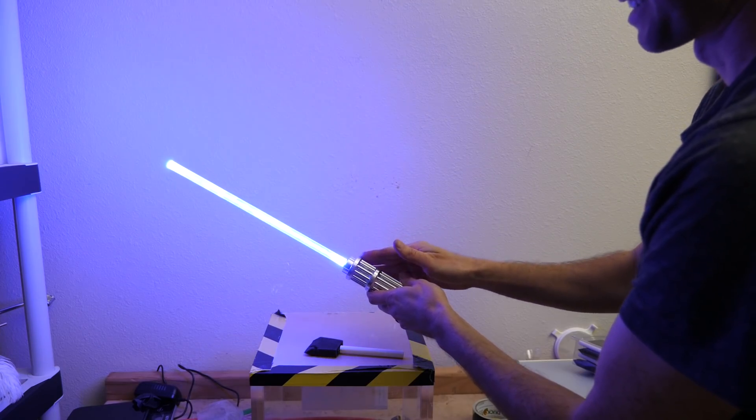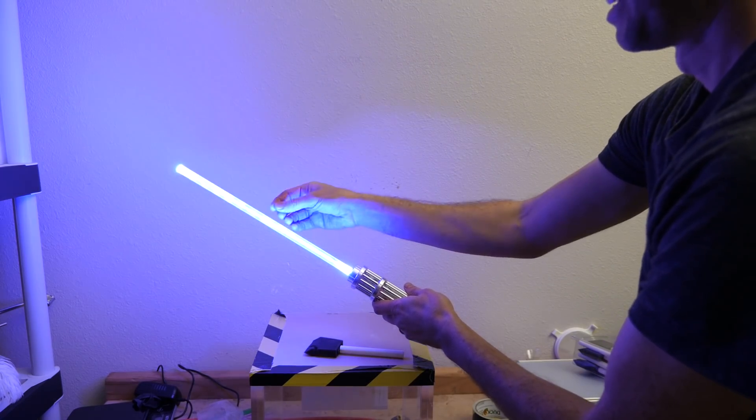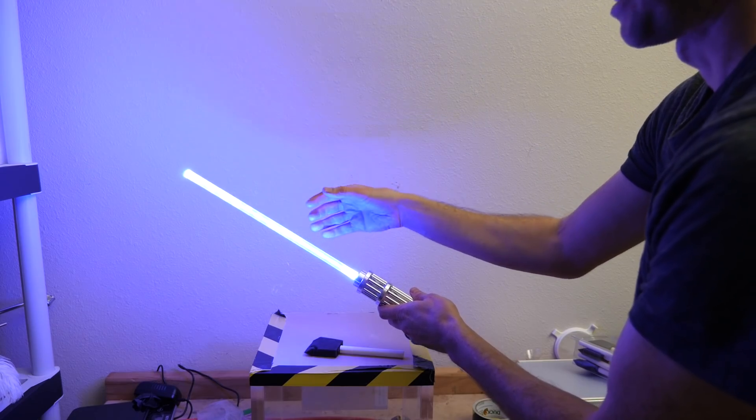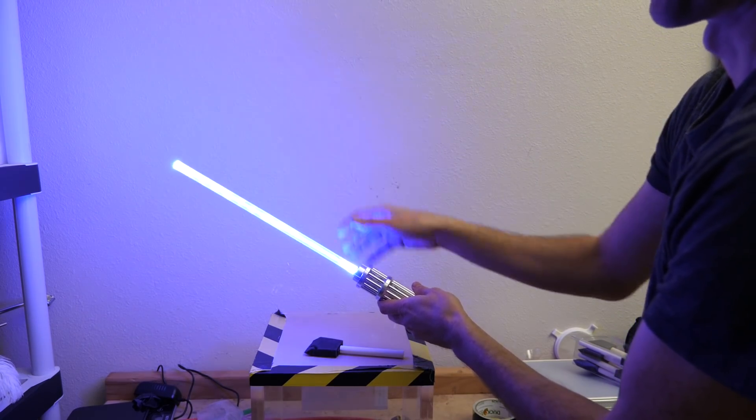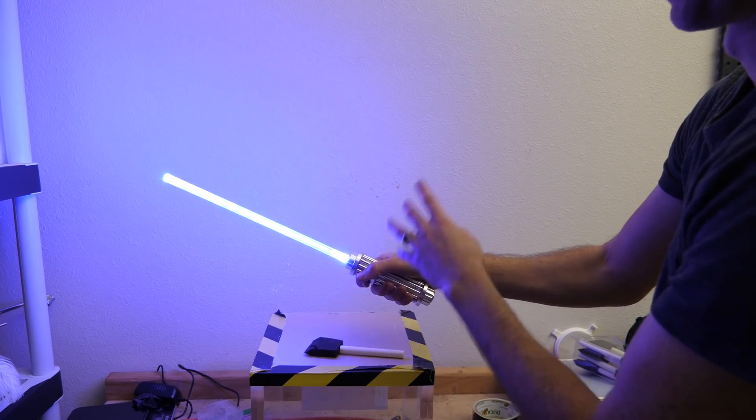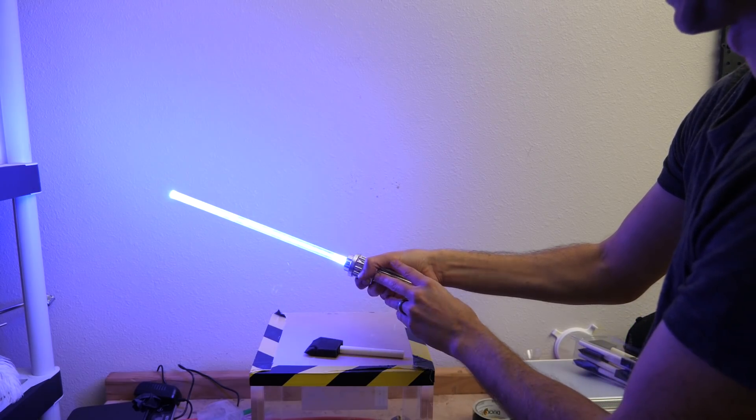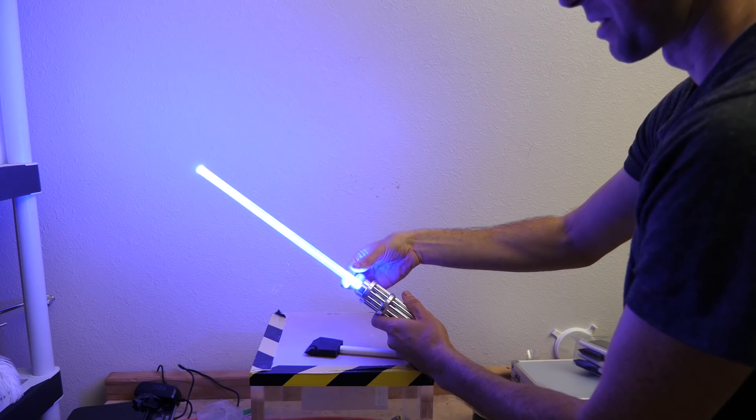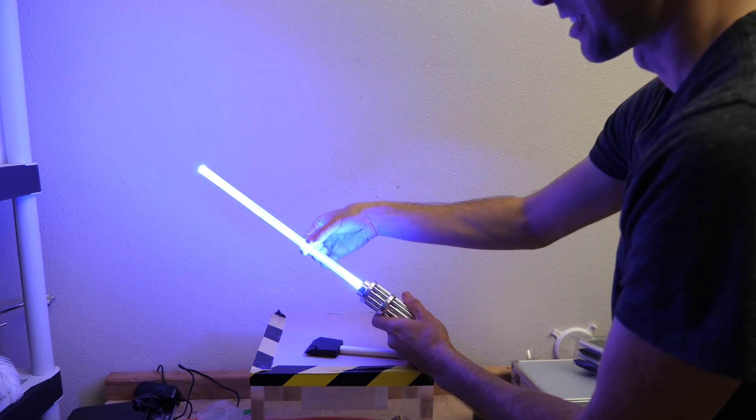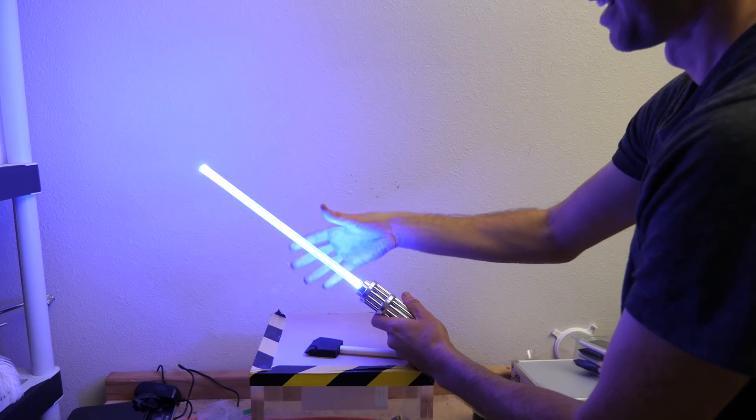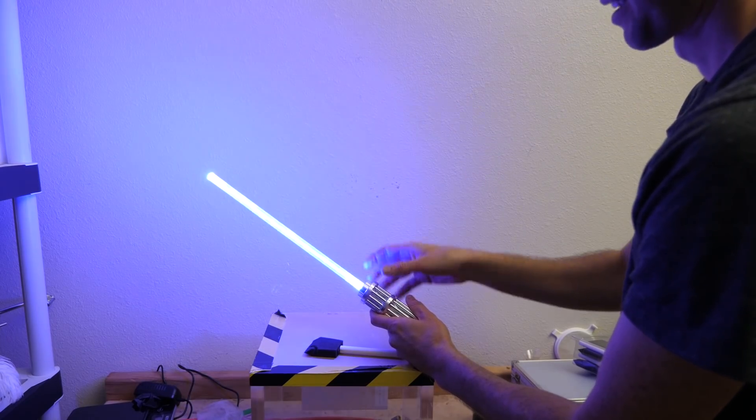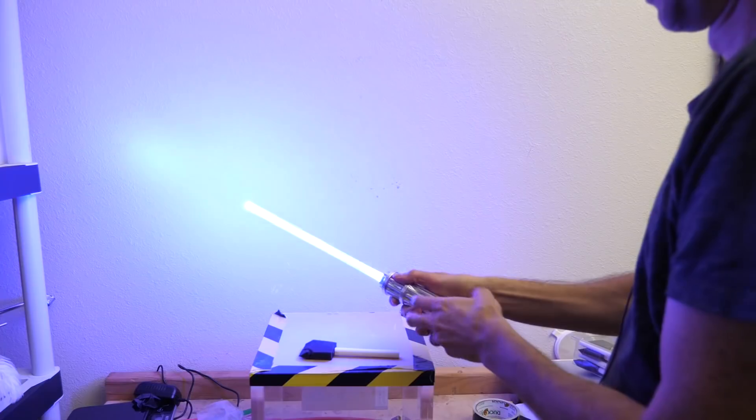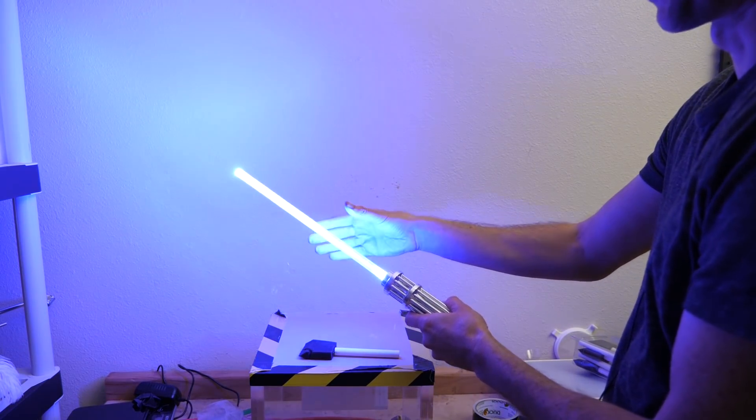But the problem with that system, if we had it in a system like this that shot light out in all directions, is it would just vaporize anything around it, including the person that's holding it. So that wouldn't work out very well for a lightsaber. In order to make a true lightsaber, you would need something that's able to contain the light to just within this beam area here and not fly outside of it. But is that really possible? Well, it's actually not as far-fetched as you think.